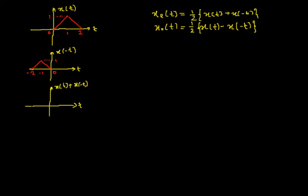First I will check the range from minus 2 to 0. In this range X(-t) is a triangular wave and X(t) is 0 from minus 2 to 0. So we are adding 0 plus this signal, meaning the triangular shape remains the same with amplitude 0 + 1 = 1.